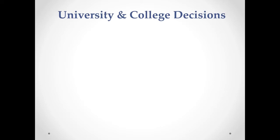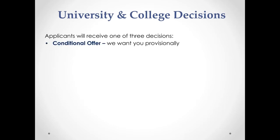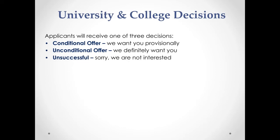Once universities and colleges have received all the information they will start making decisions. Students will hear back with one of three options: a conditional offer, meaning the college wants them provisionally provided they meet course requirements in their exams; an unconditional offer, meaning the college definitely wants to accept the student; or unsuccessful, meaning the college is not offering them a place this year.